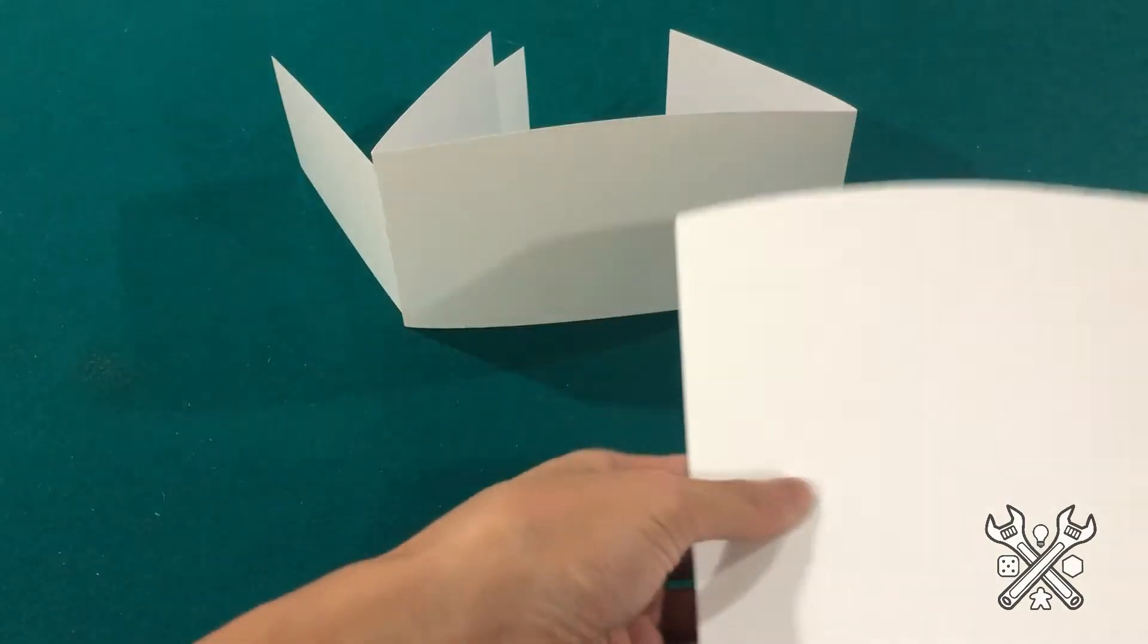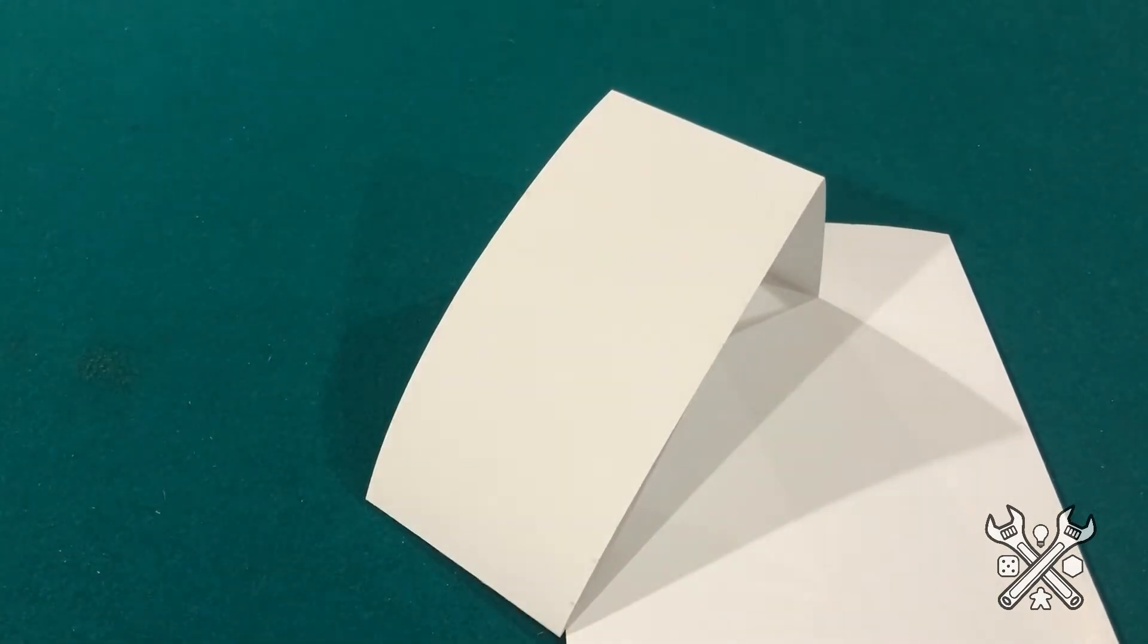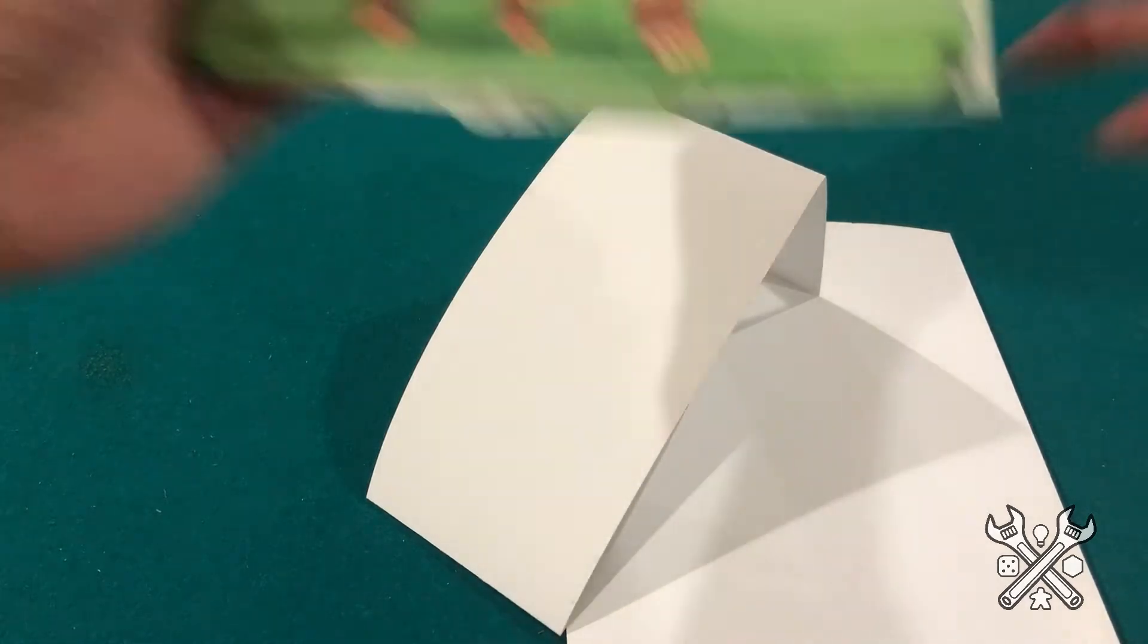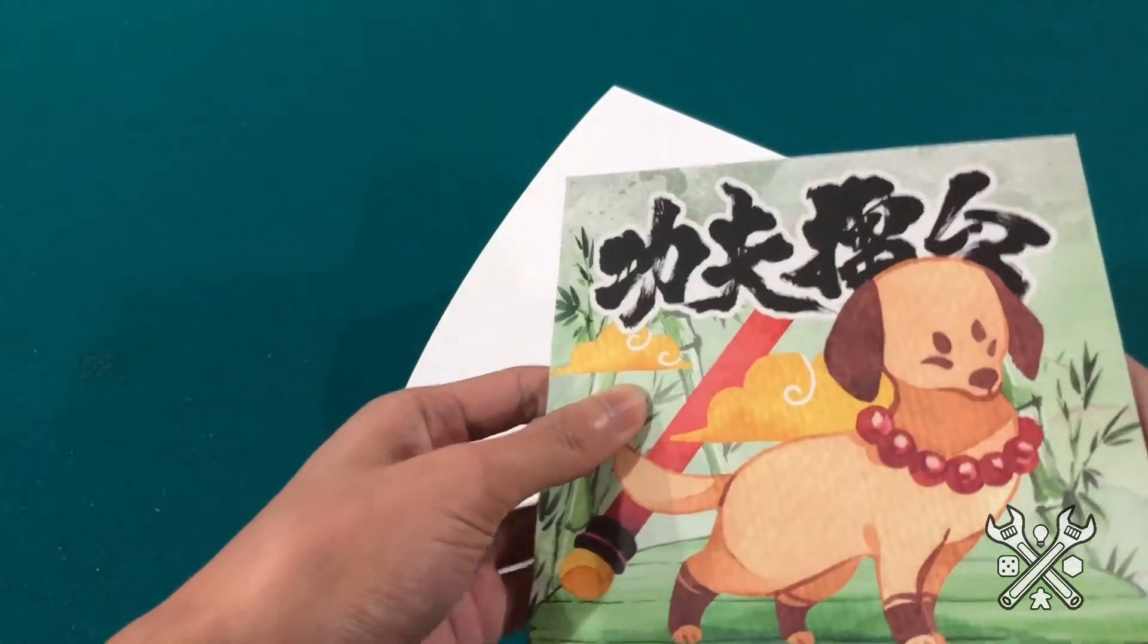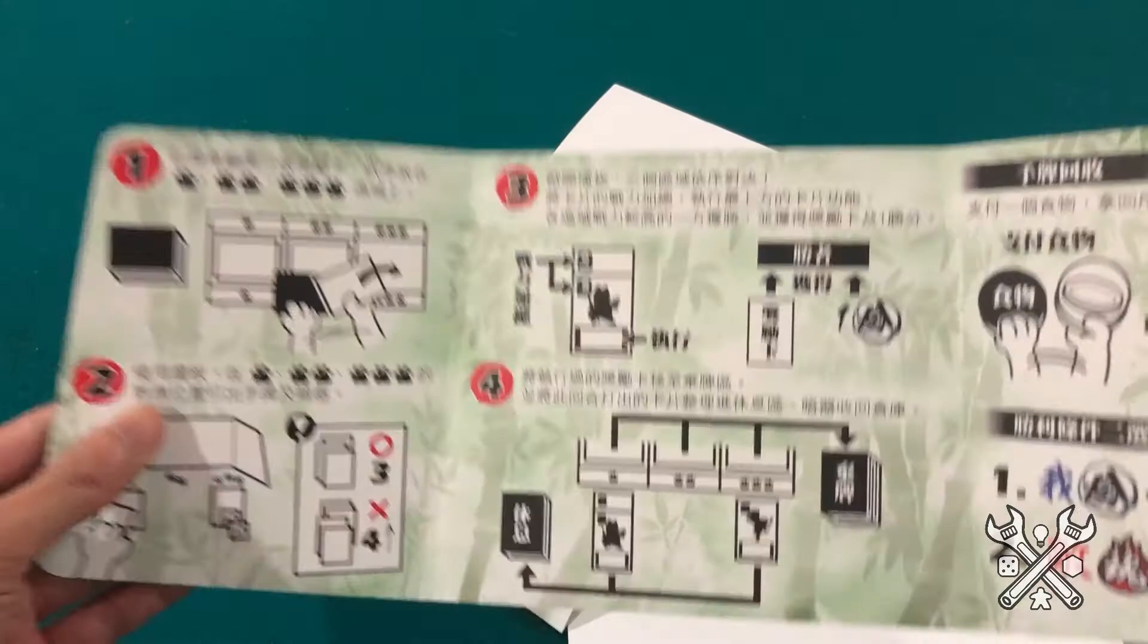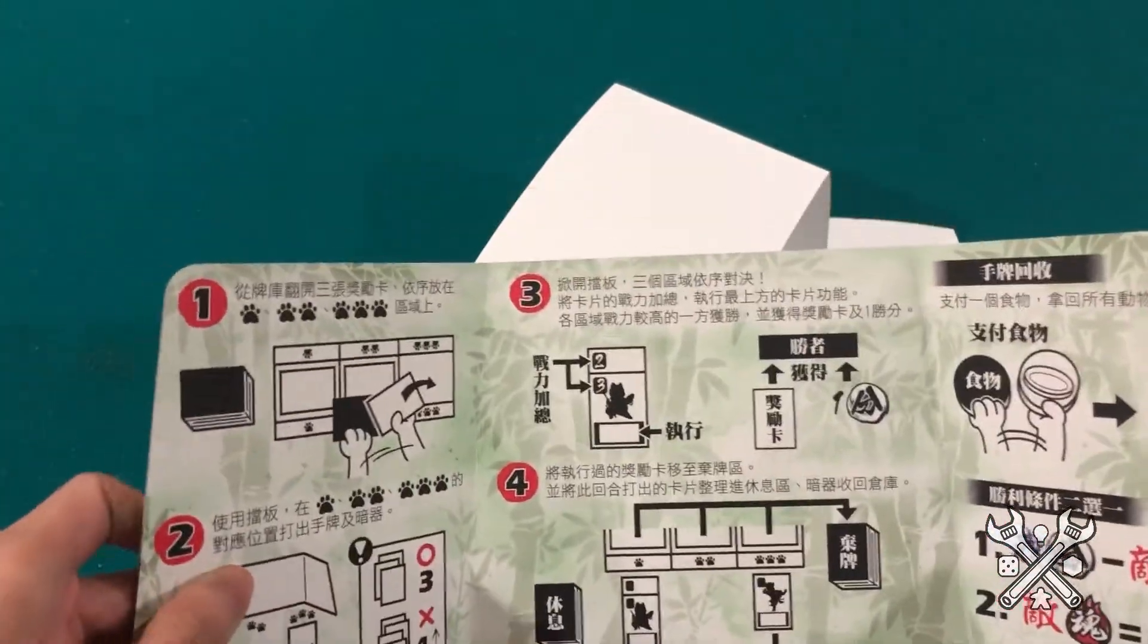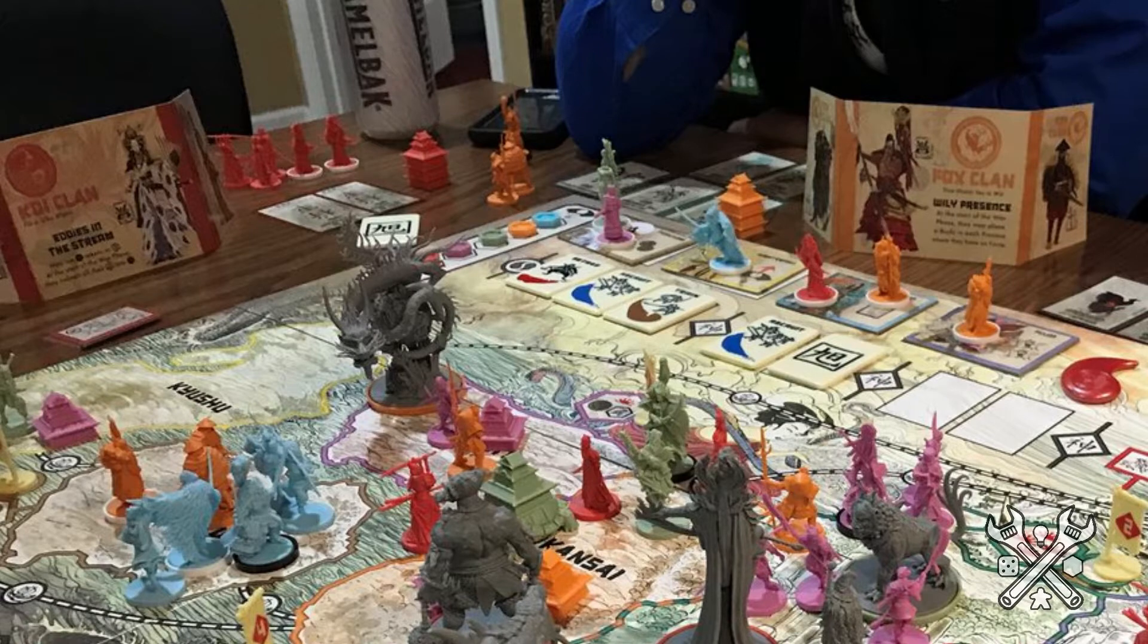In a previous video about different types of information, specifically hidden information, we had this screen from Kung Fur Fight. Very cute because it's got printed art on the front. And then on the back, it actually doubles as a player aid, which is a really awesome use for screens for players.